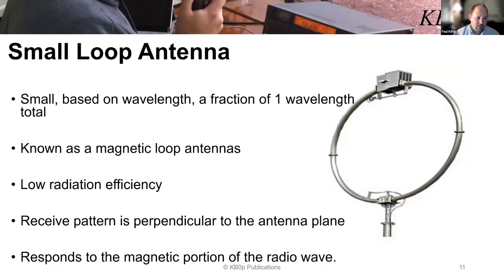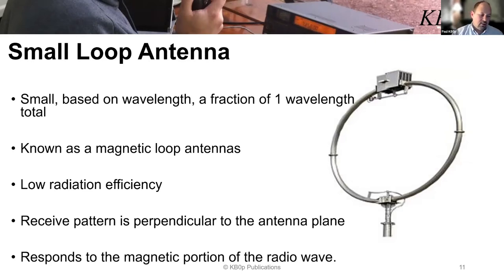A small loop is known as a magnetic loop antenna because of its small size. The voltage is very low around the loop, and because of that, the loop tends to respond more to the magnetic portion of the radio wave — which is one of the advantages for receiving. It has low radiation efficiency, so if you were to transmit on a small loop, your signal will not propagate as well as with a large loop.